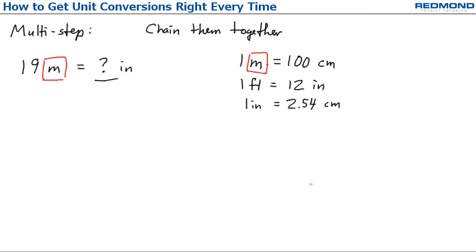I'm starting with meters and I want inches. I can go from meters to centimeters, and then from centimeters to inches. Nice. I put 19 meters on the left, and I want to get rid of meters, so I put meters on the bottom of the conversion factor and then centimeters on the top.